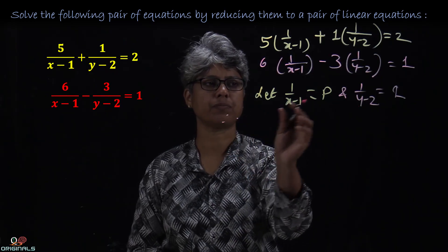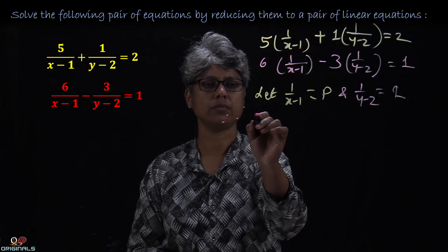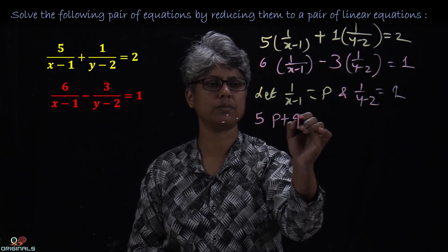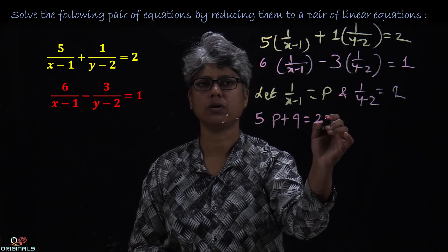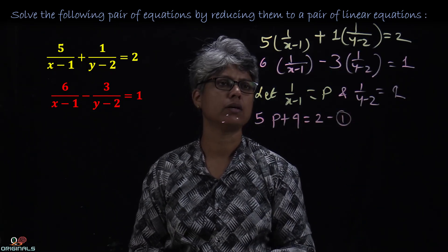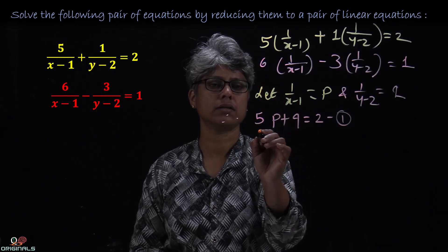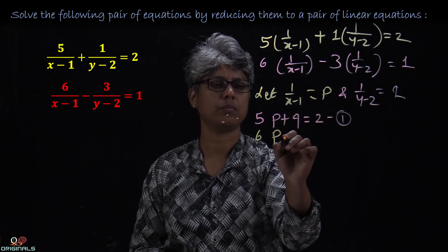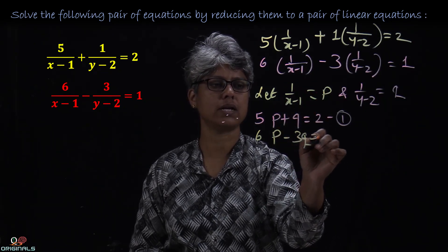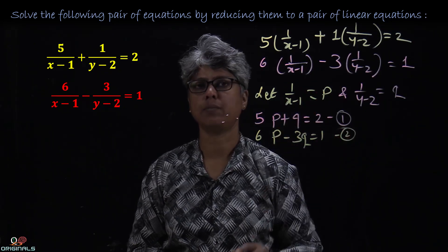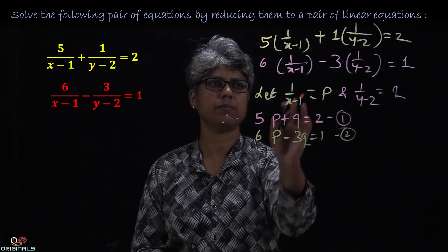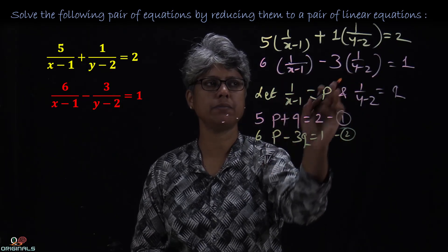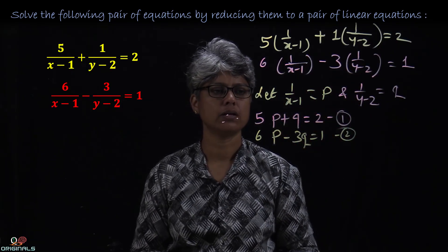So what will the equations become? Therefore, this will become 5P plus Q equal to 2 — that is our equation 1. The second equation becomes 6P minus 3Q equal to 1 — that is our equation 2. So we have 5P + Q = 2 and 6P - 3Q = 1.